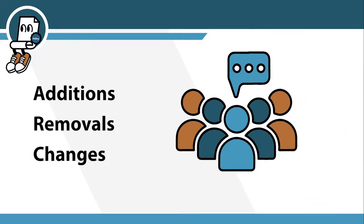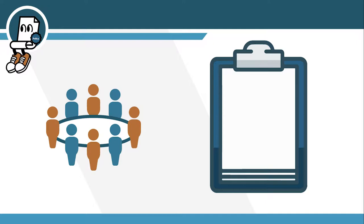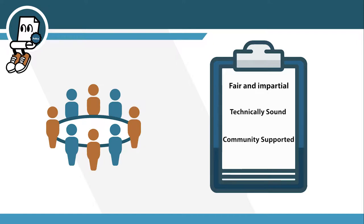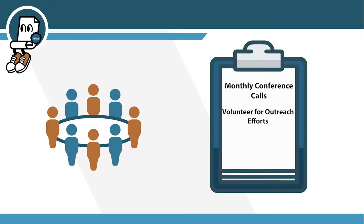The Advisory Council is an elected body at ARIN whose primary responsibility is to develop fair and impartial, technically sound, and community-supported internet number resource policy. Eligible general members elect this 15-member body. In addition to facilitating the policy development process, AC members participate in monthly conference calls, volunteer for outreach efforts, monitor the public policy mailing list, and participate in AC working groups, such as the Number Resource Policy Manual Working Group and the Policy Development Process Working Group.